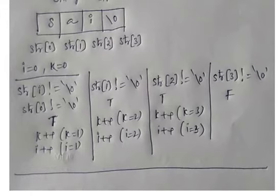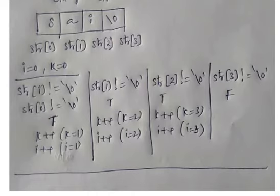Again check the condition. Check the condition till it becomes false. str[3] not equal to backslash 0 — str[3] is backslash 0, so backslash 0 not equal to backslash 0 is false. Come out of the loop and the value of k is 3, that is the length of the string.